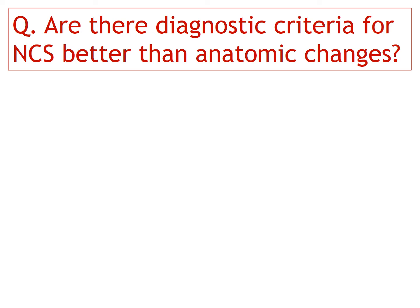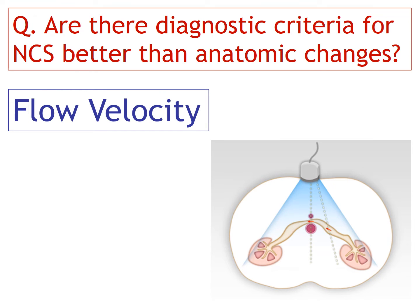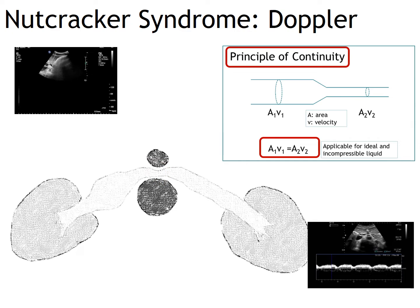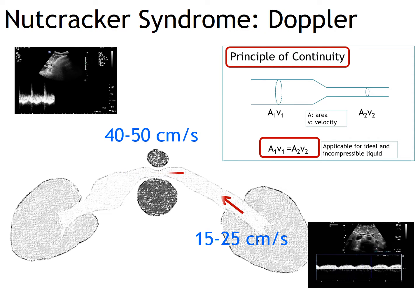Are there diagnostic criteria for nutcracker syndrome better than anatomic changes? The answer is yes — it is flow velocity, measurable using non-invasive Doppler ultrasound. For an ideal and incompressible liquid, the amount of flow through a tubular pathway of different diameters should be the same, so velocity in the narrow area is faster than in the wide area. This is the principle of continuity. Because the left renal vein at the aorto-mesenteric portion is narrower than the hilar portion, velocity there is normally higher — 40 to 50 cm/sec versus 15 to 25 cm/sec at the hilum.